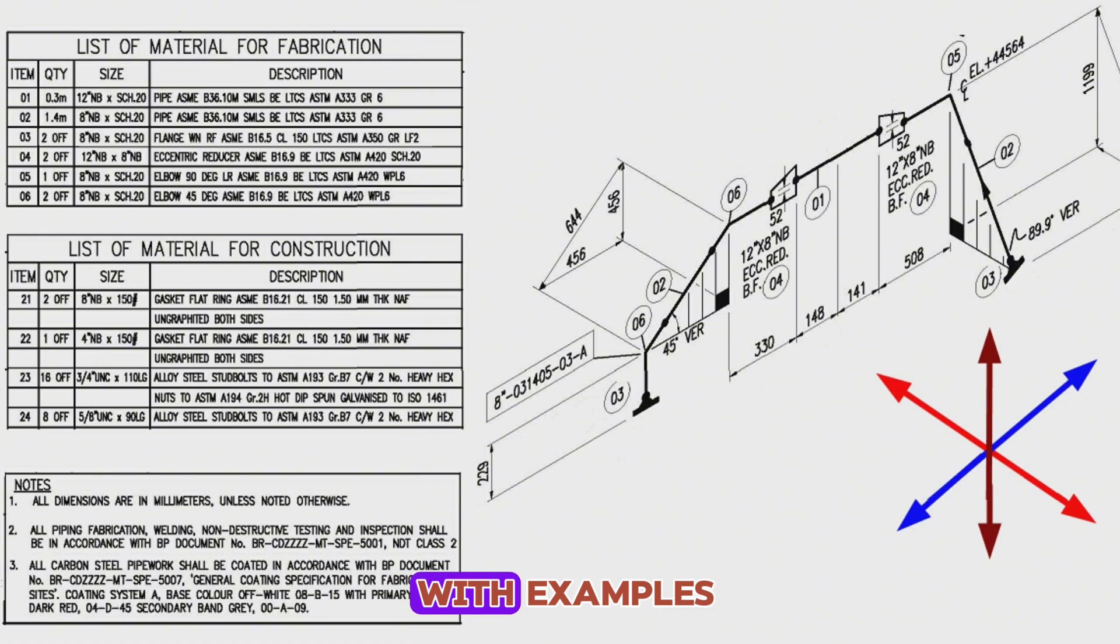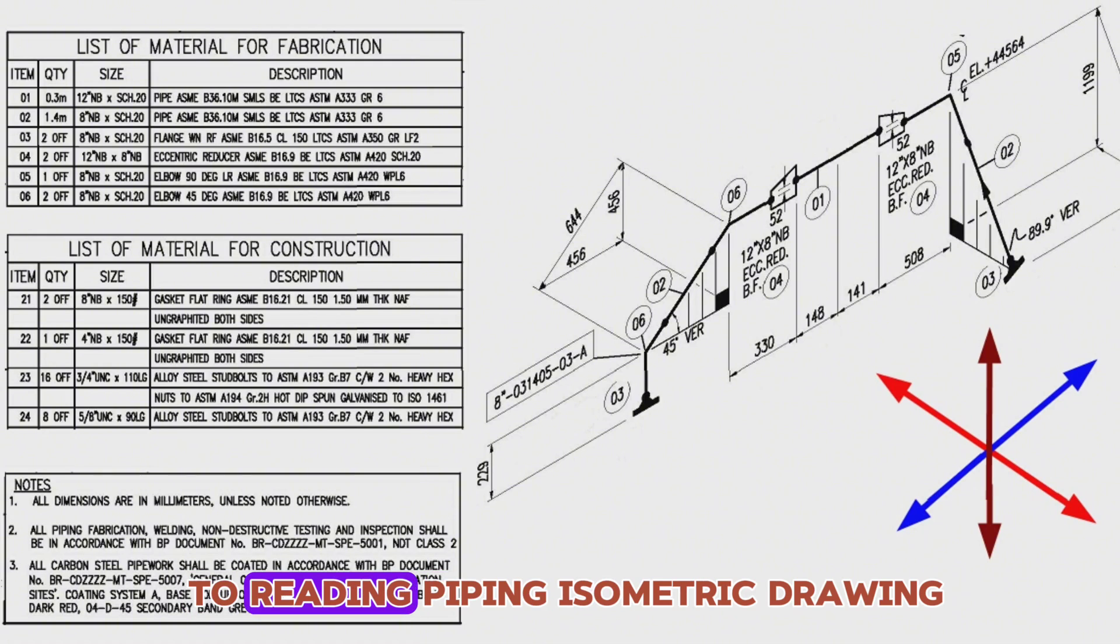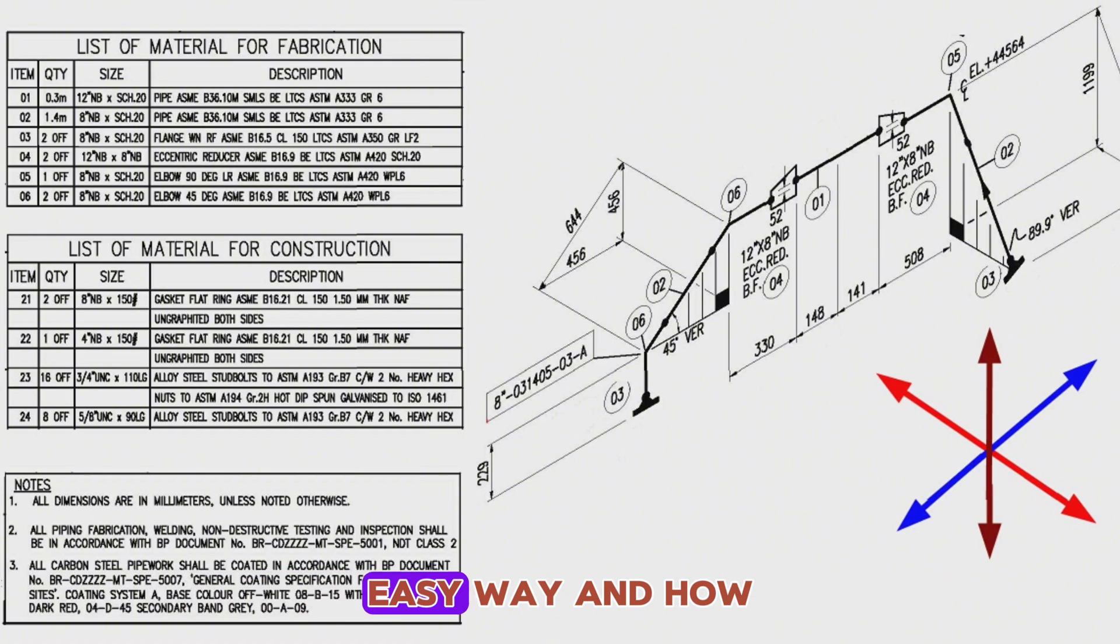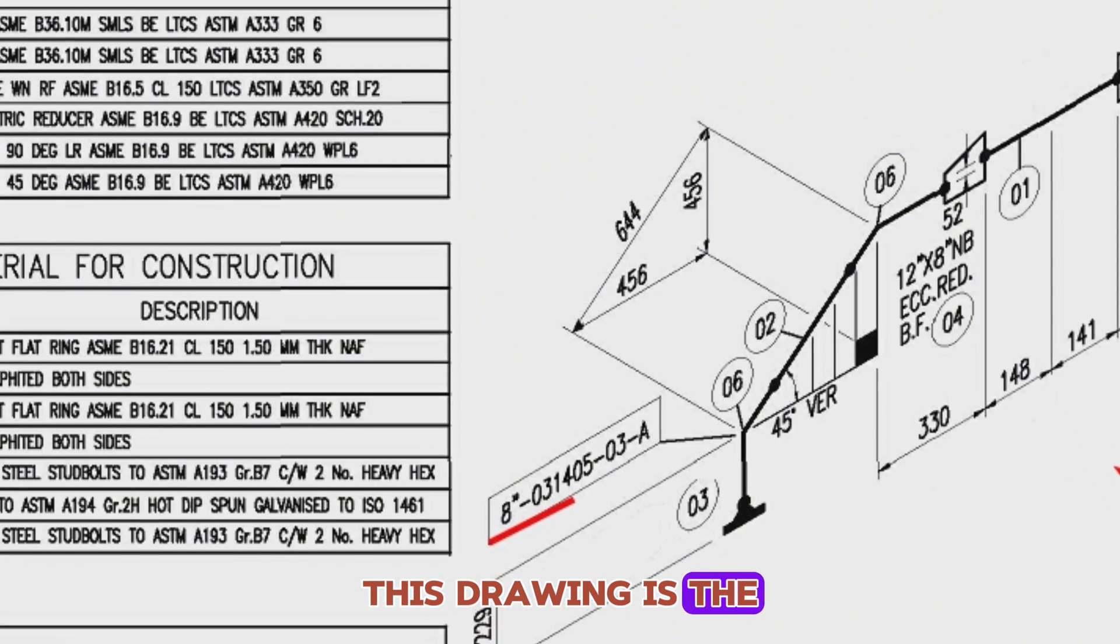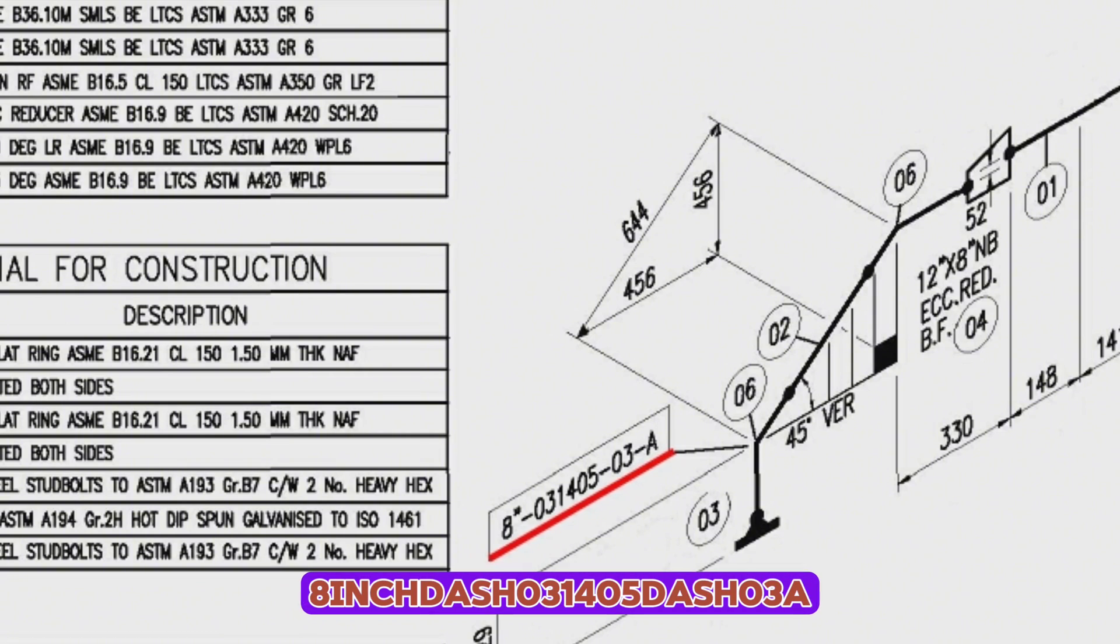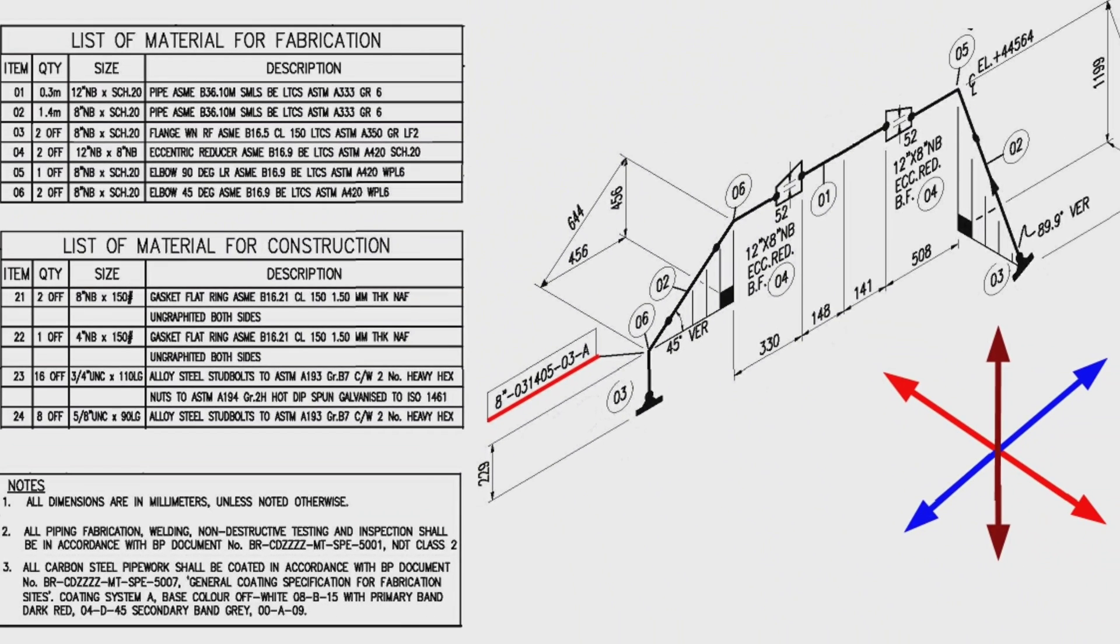We will be explained with examples in this video how to read piping isometric drawings the easy way and how to learn bill of materials in the piping drawings. This drawing is the drawing of pipeline number 8-in-031405-03A.